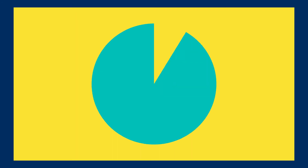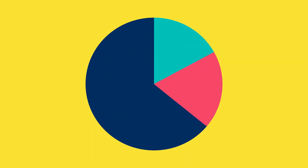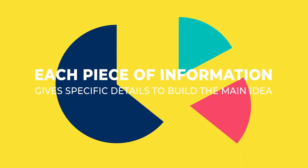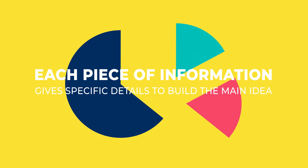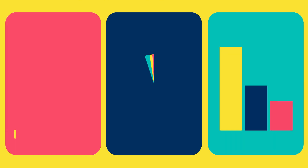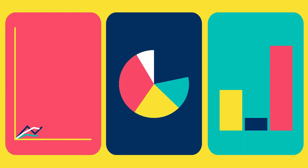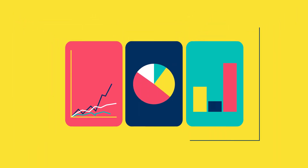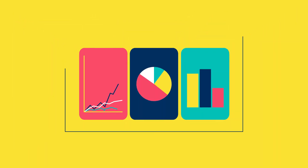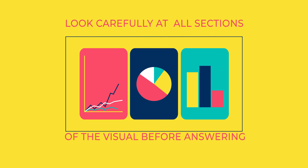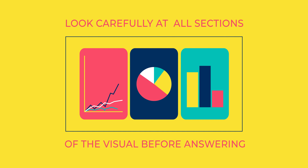Finally, think of each piece of the chart or graph as a sentence in a prose paragraph. Each piece of information gives specific details to build the main idea or key findings in the chart or graph. So, just as you closely read a passage or text — re-reading to look for specific details to clarify, verify, or modify your understanding — be sure to closely read, looking carefully at all sections of the visual before answering any questions that require interpretation of a chart or graph.